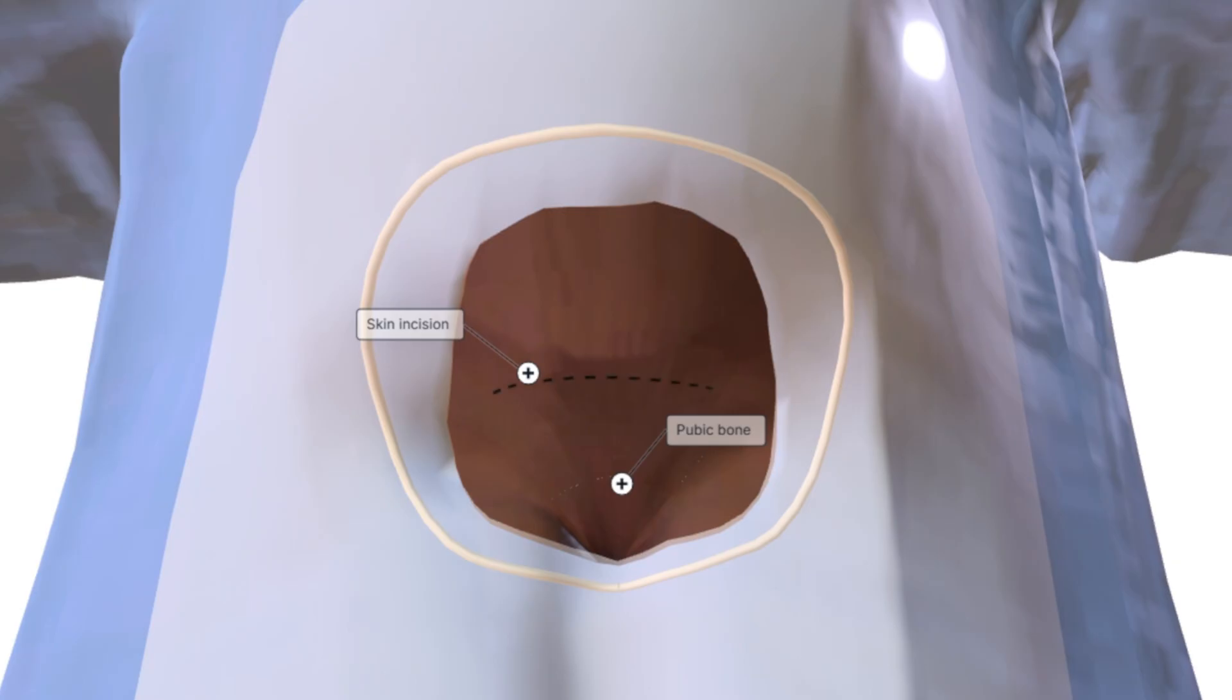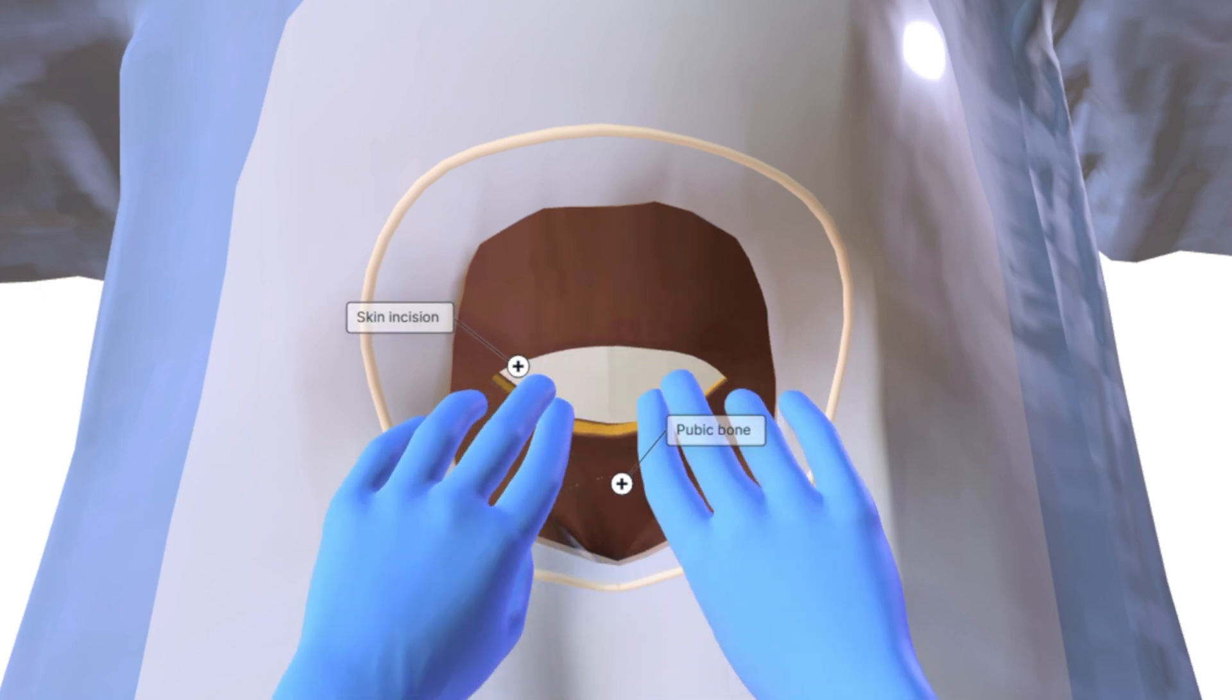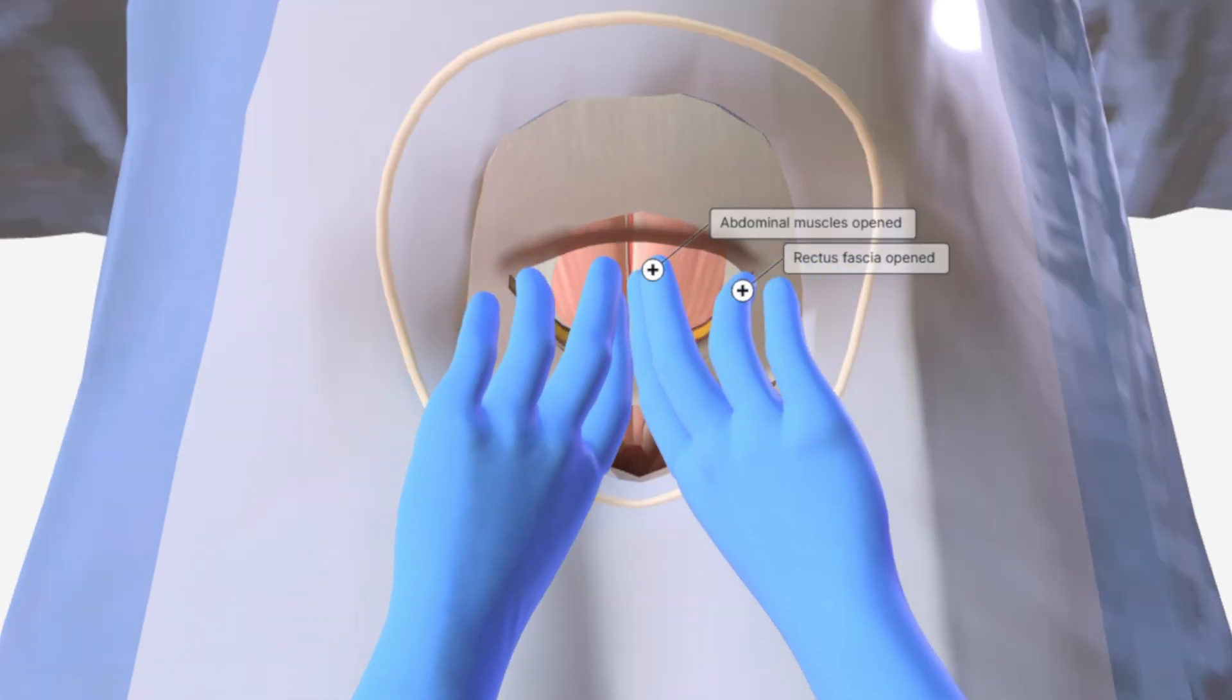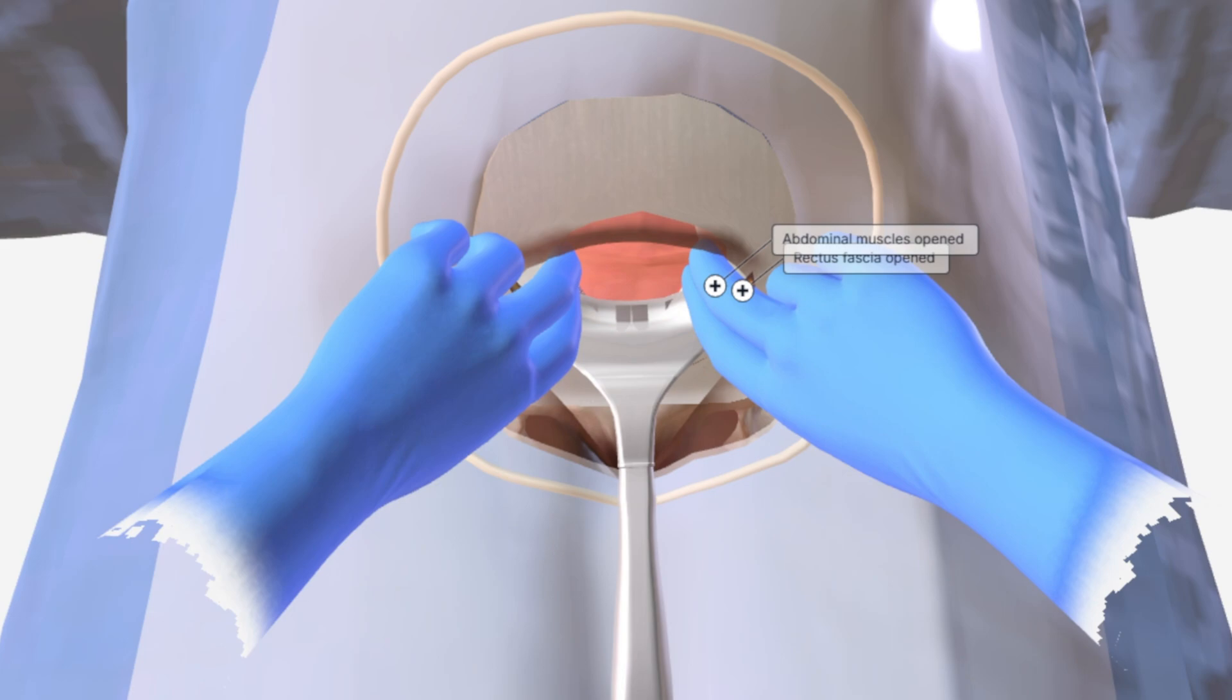The journey begins with a careful incision through the skin, followed by opening the fascia covering the rectus abdominis muscles. The muscles are gently separated to expose the underlying peritoneum. The peritoneum is opened and the abdominal cavity is accessed.